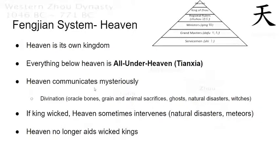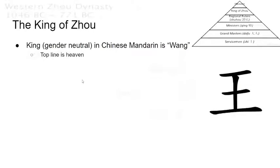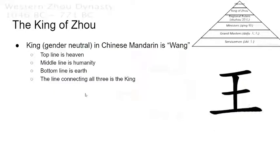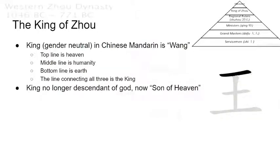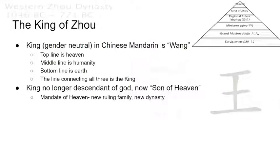The key difference between the Zhou dynasty compared to the Shang dynasty is that Heaven no longer aids wicked kings. The King in China is a gender-neutral term — in Mandarin, the king is also known as Wang. If you look at the Chinese character on the right, the top line is Heaven, the middle line is Humanity, the bottom line is Earth, and the vertical line connecting all three is the King.